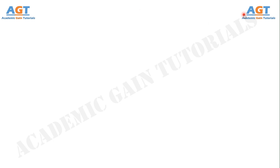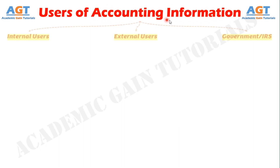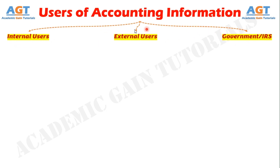The accounting process provides financial data for a broad range of individuals whose objectives in studying the data vary widely. Three primary users of accounting information were previously identified: internal users, external users, and government or IRS.